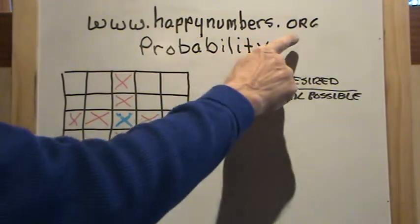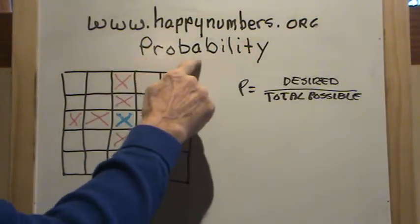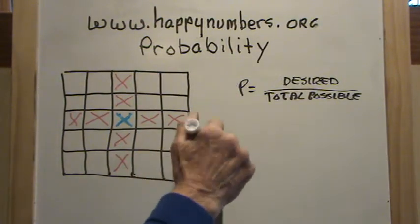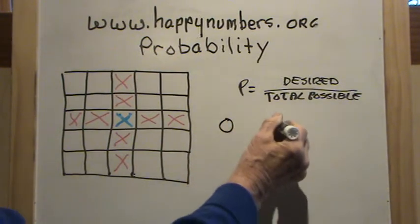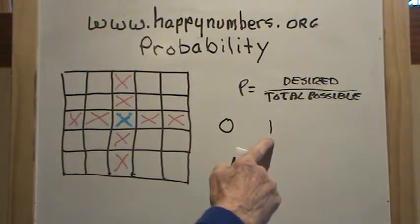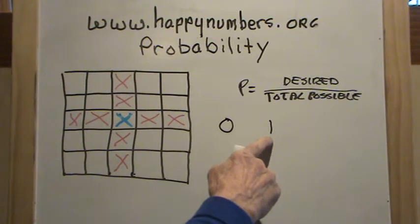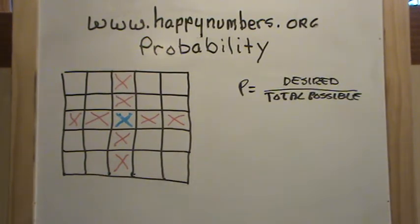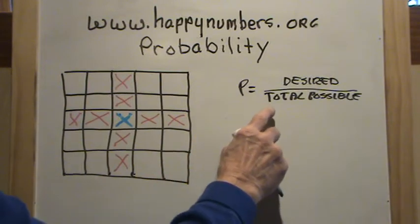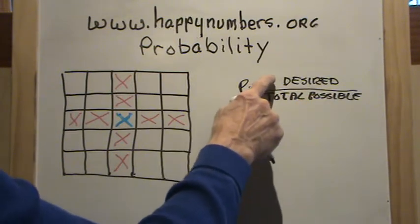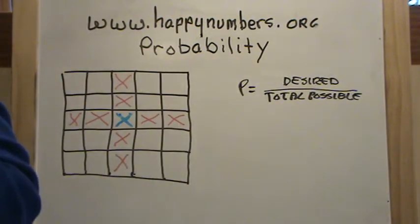Welcome to www.happynumbers.org and today's lesson is a continuation of probability. Just a quick review: probability is always a number between 0 and 1. It can never be less than 0 and can never be more than 1. So if you're taking a test and one of the answer choices for a probability problem is greater than 1 or less than 0, those answers cannot be correct. The way we compute probability is we look at the total possible outcomes of some event divided into the number of desired outcomes.